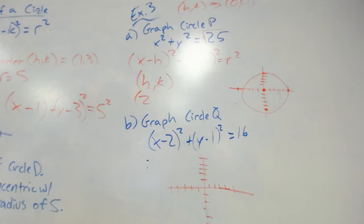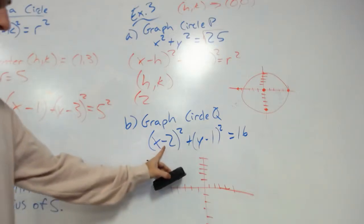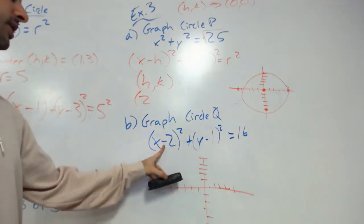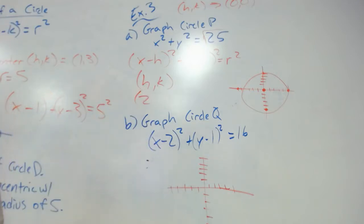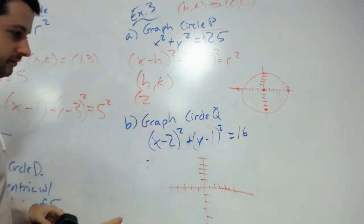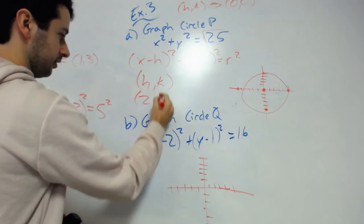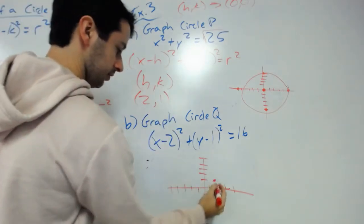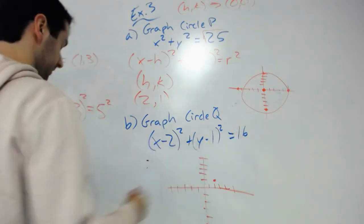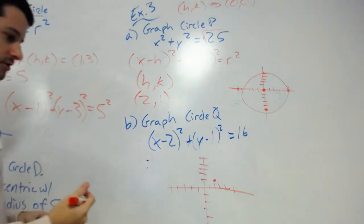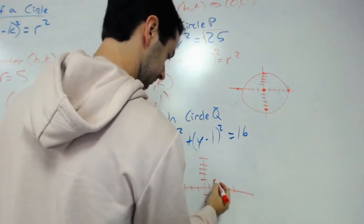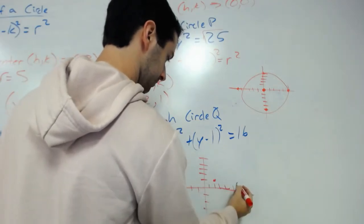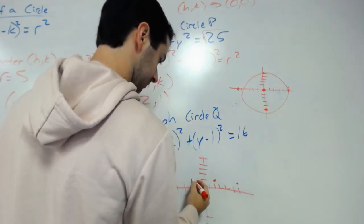If it's actually positive in the formula, it means it's originally negative for the center - kind of confusing, but hopefully you can understand. h is 2, k is 1, so our center is (2, 1). The radius gives us 16 in r squared position, so square root that and you move over 4 times.